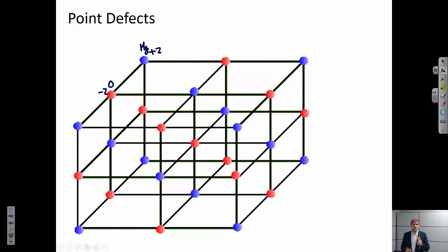Because of that, there are two special kinds of point defects that we see very frequently in ionic systems. The first are called Schottky defects.